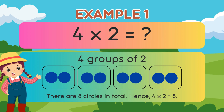Example 1: 4 times 2. That means 4 groups of 2. 1, 2, 3, 4. There are 2 circles in each group. There are 8 circles in total. Hence, 4 times 2 equals 8.